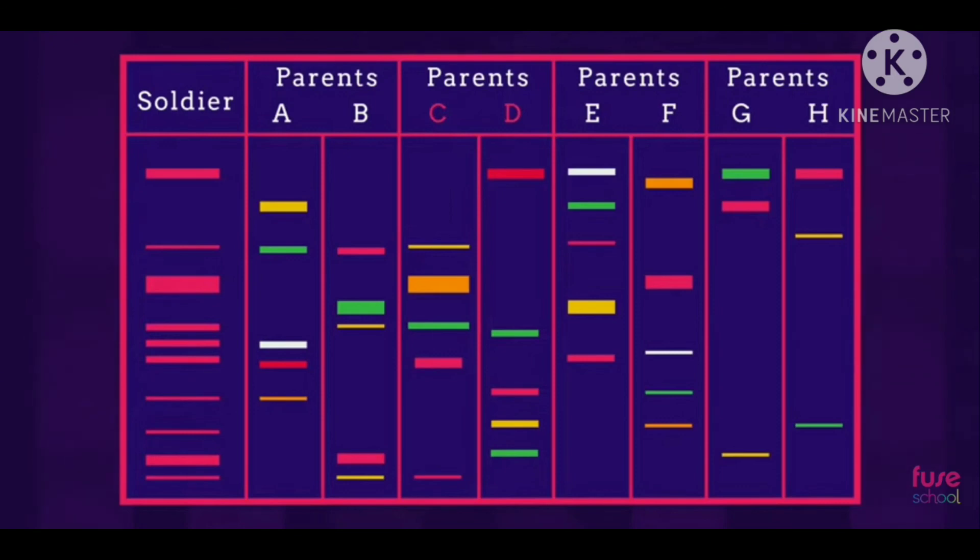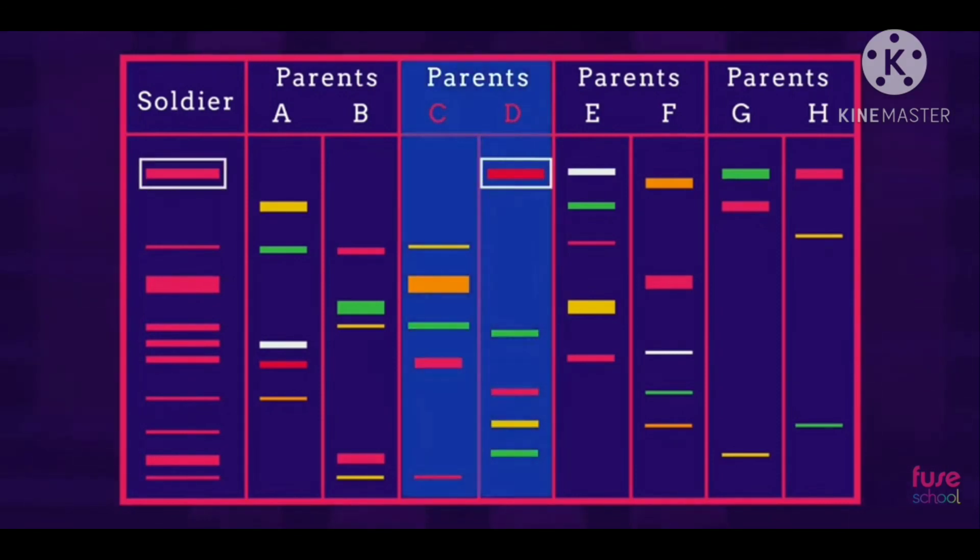Parent C and D. As you can see, he inherited the first band from parent D and the second, third, and fourth from parent C and so on.